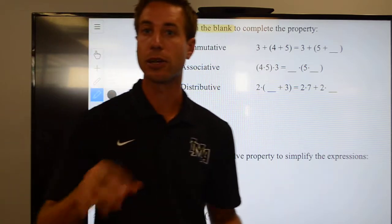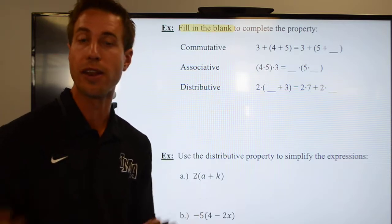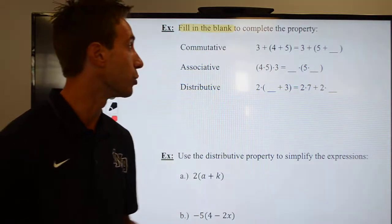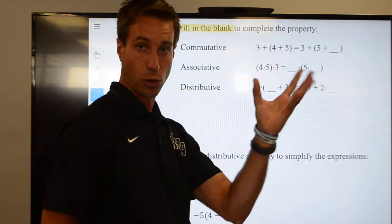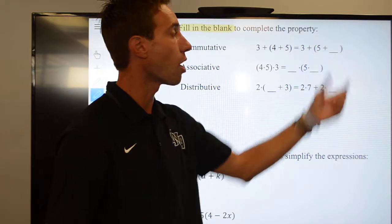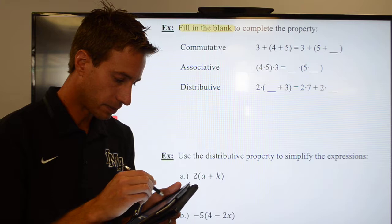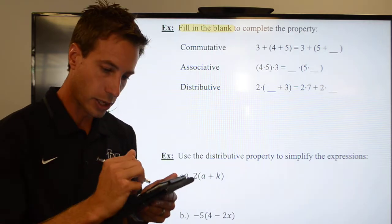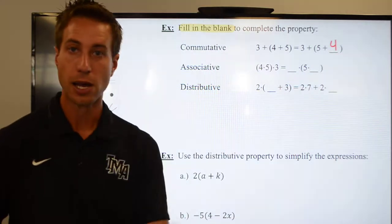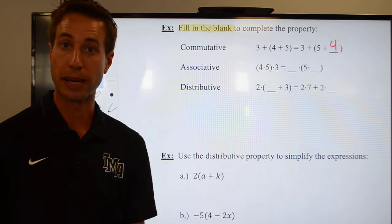So here we go. This is the commutative property. Remember, the commutative property says that order does not matter. We can change the order the numbers are in for addition and multiplication. So let's go ahead and see if we can do that. I have 3 plus the quantity 4 plus 5. On the other side, what I have is 3 plus the quantity, now the 5 is first. The only number I haven't used is the 4. So let's go ahead and throw that 4 in there. I've changed the order of the numbers, but the commutative property says for addition, you'll get the same answer. Not a problem.